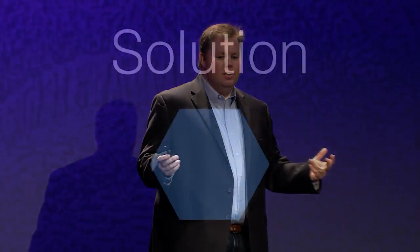That turns out to be our goal in the pattern: we want to apply a solution that brings the forces back into balance. We want the sum of the problem and the solution to equal zero. So the solution ends up being represented by a pattern which brings the context back into balance.